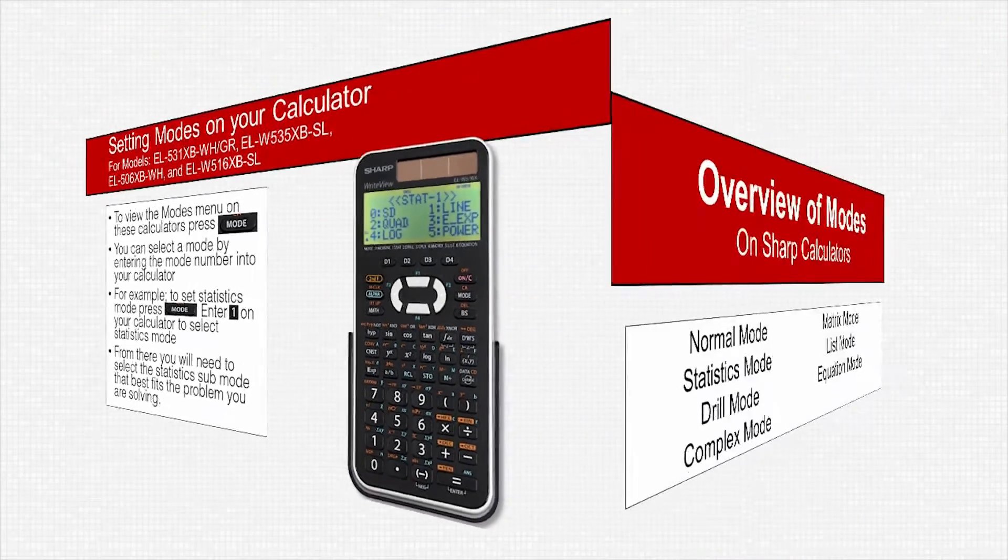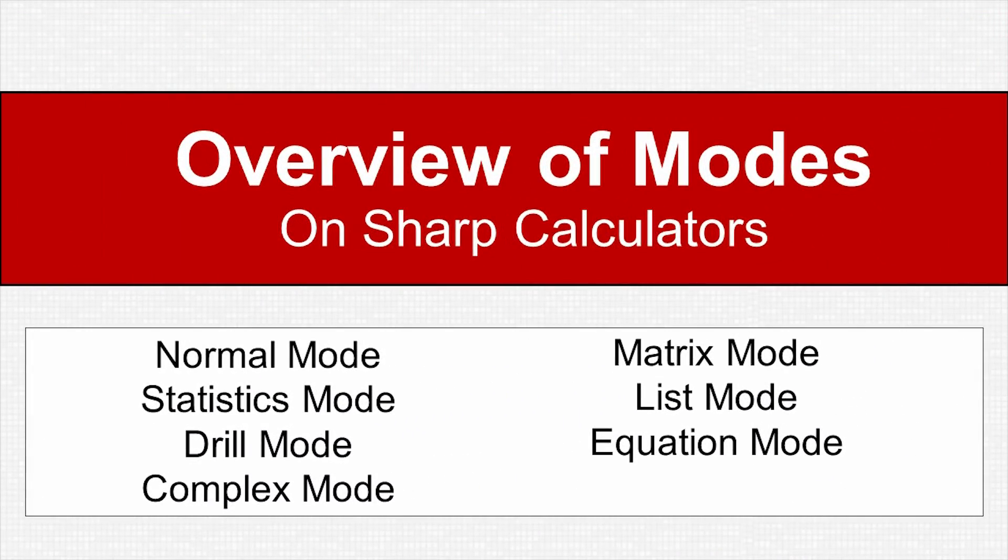Now that you know how to select modes on your calculator, here's a brief overview of what the modes are: normal mode, statistics mode, drill mode, complex mode, matrix mode, list mode, and equation mode. Not every mode will be available for every calculator. For each mode we will list the calculators that have that mode available.